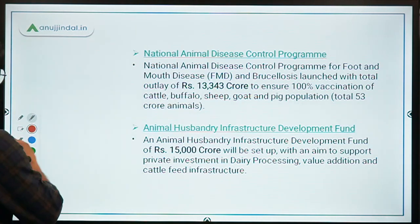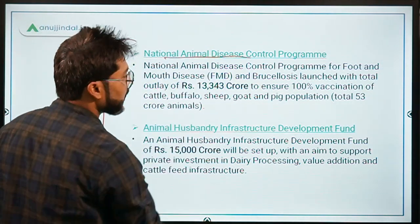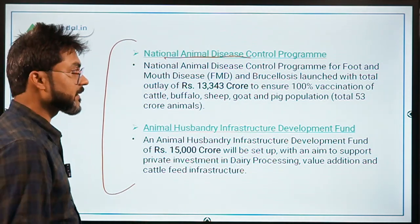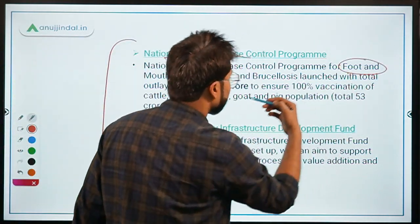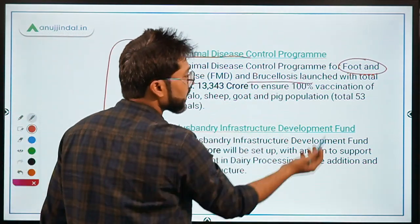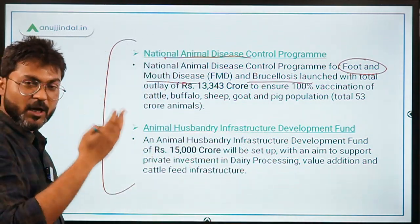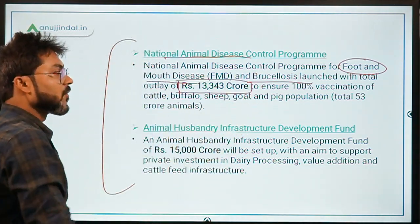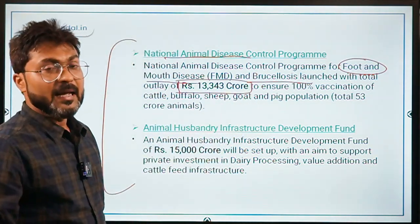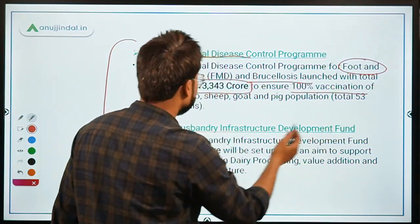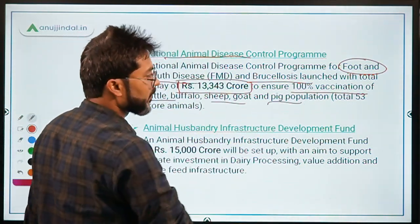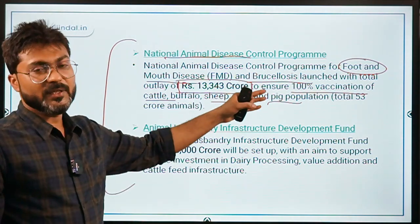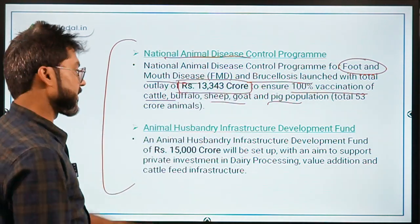The National Animal Disease Control Programme was announced to control foot and mouth disease and brucellosis. ₹13,343 crore was provided for 100% vaccination of cattle, buffalo, sheep, goat, and pig populations to protect them from these diseases.